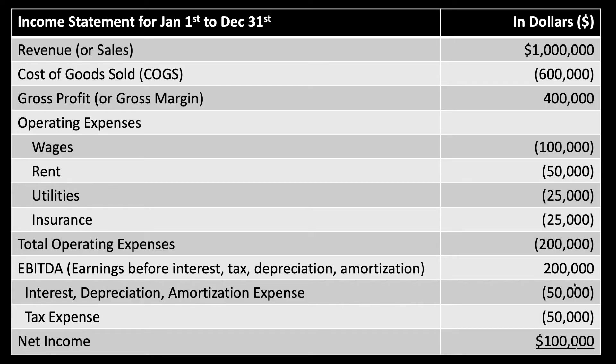What did you pay your pharmacist? What did you pay your technicians? What did you pay for your building, rent or lease, or mortgage? What were your utilities? What was the insurance payment for your liability and property insurances? Maybe you total out your operating expenses, and in this period they equal $200,000.